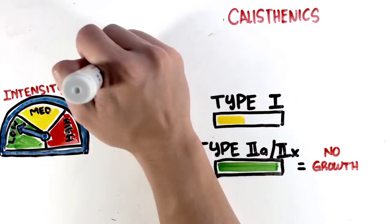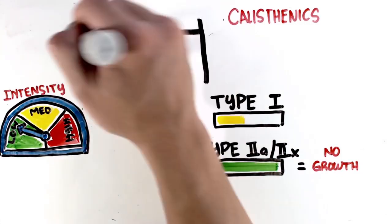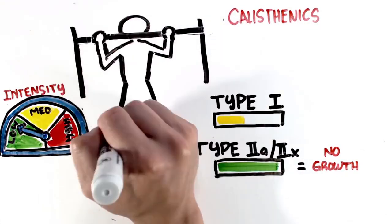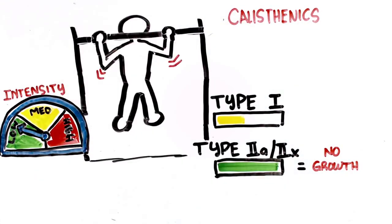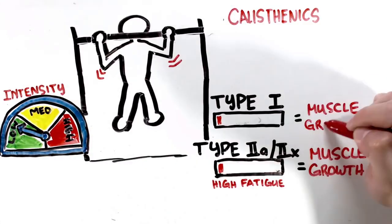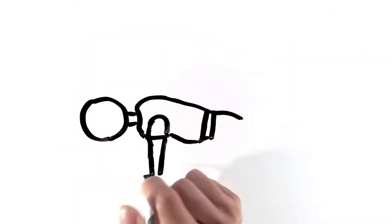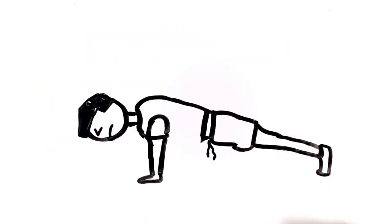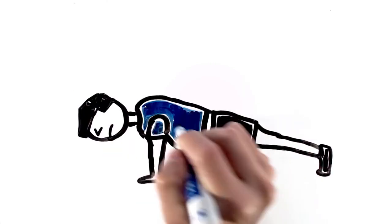But other calisthenics exercises do, in fact, elicit high enough of a demand to hit those large muscle fibers. Take a pull-up for example, where on average people can hardly even do 5. The movement demands all fiber types to fire and eventually exhaust, thus promoting muscle growth. Push-ups are another good example of a calisthenics exercise that can elicit muscle growth, especially for beginners that struggle to do even 10.